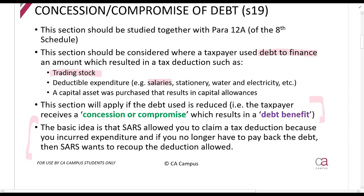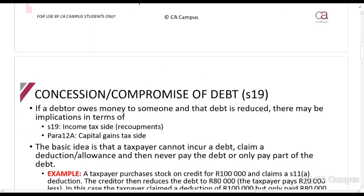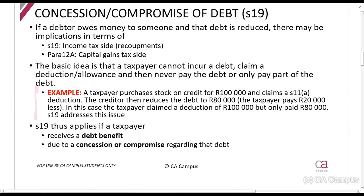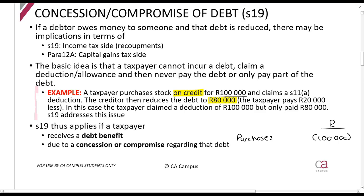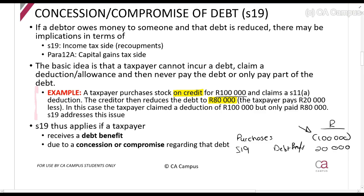The basic idea is that if SARS allows you to claim a tax deduction because you incurred expenditure, but you no longer have to pay the debt, SARS wants to recoup the amount they allowed as a deduction. For example: a taxpayer purchased stock on credit for 100,000 rands and claims a section 11A deduction. The creditor then reduces the debt to 80,000 rands — so 20,000 rands is written off. The taxpayer claimed 100,000 rands as a deduction but only paid 80,000 rands. SARS will say, under section 19, that 20,000 rand debt benefit will be added back.